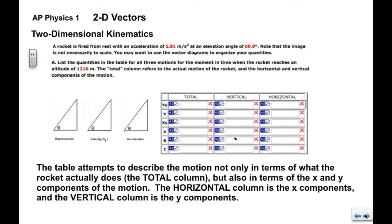Again, the table attempts to describe the motion not only in terms of what the rocket actually does, that's the total column, but also in terms of the x and y components of the motion. The x components would be in the horizontal column, the y components would be in the vertical column.